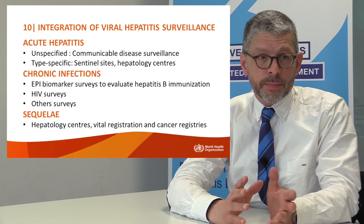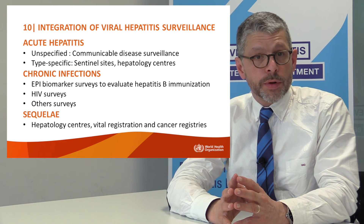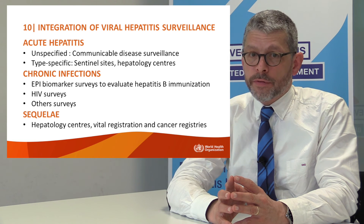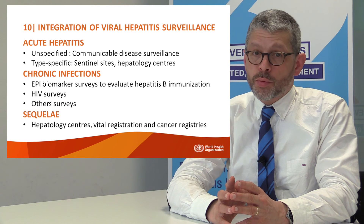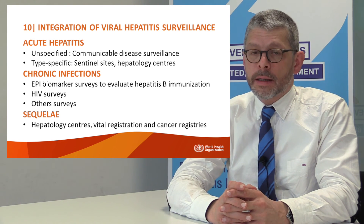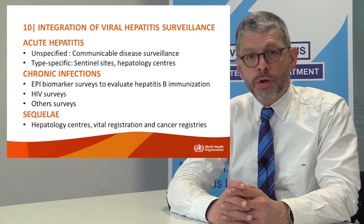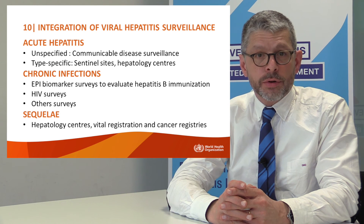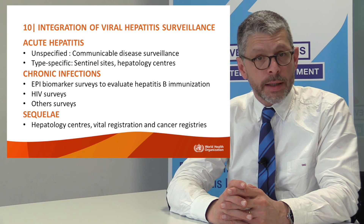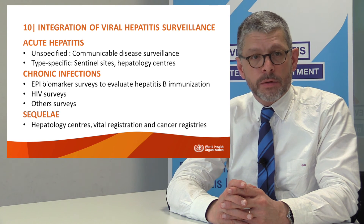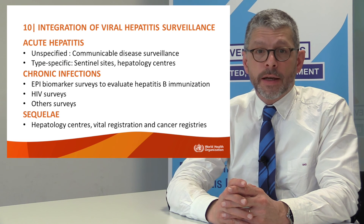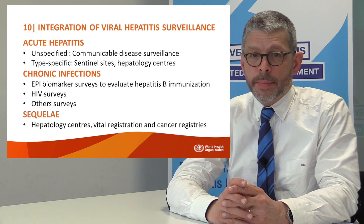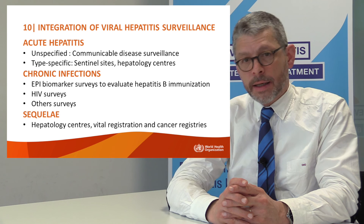Because we are looking for different outcomes ranging from acute hepatitis to chronic infections to sequelae, we need to work with the right professionals and programs. For acute unspecified hepatitis, one works with communicable disease surveillance. For type-specific acute hepatitis, one needs hepatology centers with good biomarker diagnostics. For chronic infections, one coordinates with EPI biomarker surveys, HIV surveys, or DHS surveys. For sequelae, collaborations are needed with hepatology centers, vital registration systems, and cancer registries.